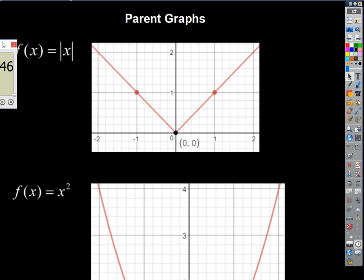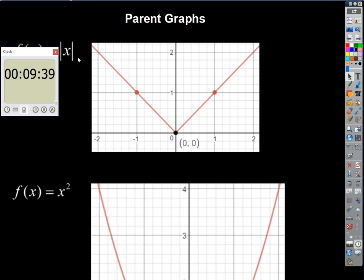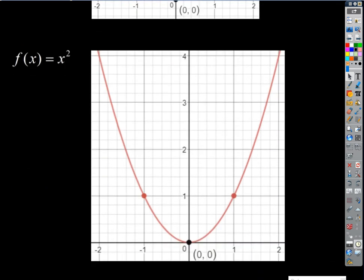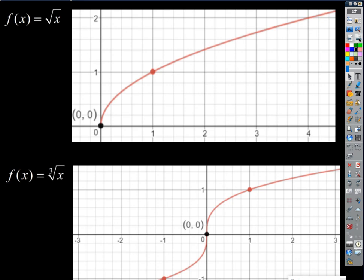All the parent graphs we looked at yesterday, you might have noticed that the special points were always at the origin. So for the vertex of this absolute value graph or the vertex of this parabola, this quadratic function, or the starting point of the square root graph, they're always at the origin.